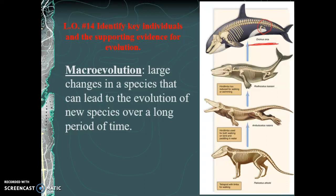Let's rewind the evolutionary clock and go back about 60 million years ago. At that time, there were land-based mammals running around — this animal called Pachyocetus. It had four limbs, hip bones, shoulders, a tail, and all the basic mammal features.